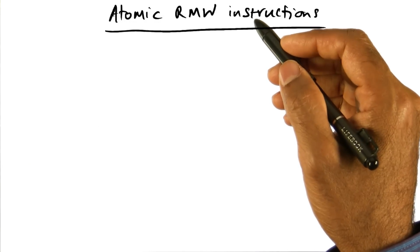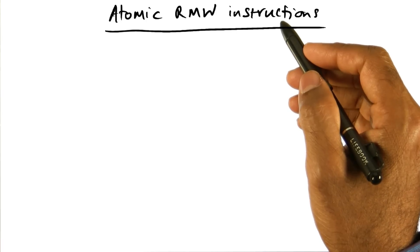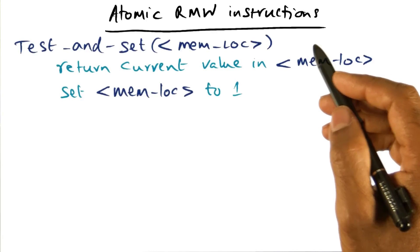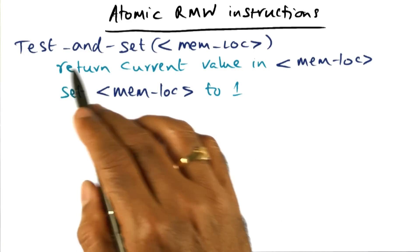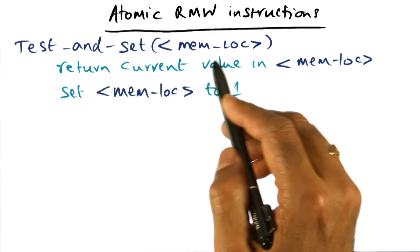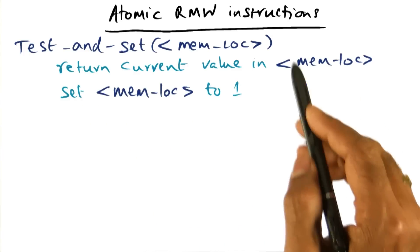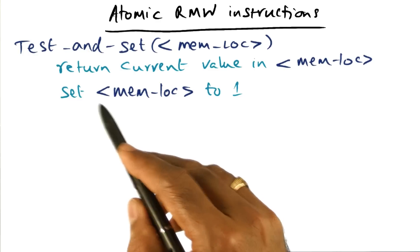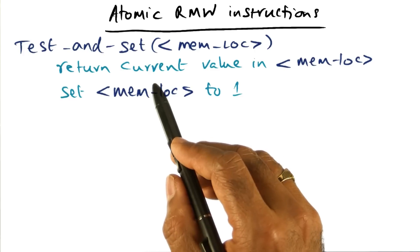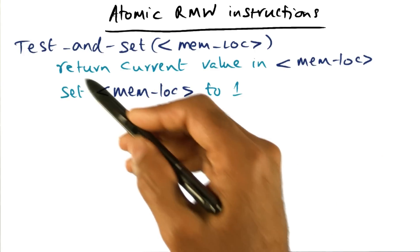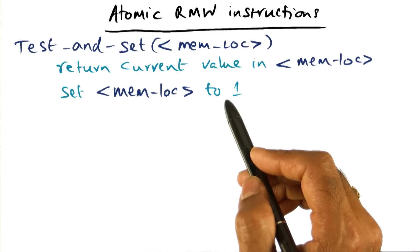Now several flavors of read, modify, write instructions have been proposed and or have been implemented in processor architectures. And we will look at a couple of them. The first one is what is called a test and set instruction. The idea here is, the test and set instruction takes on a memory location as an argument. And what it does is, it returns the current value that is in this particular memory location, and also sets the memory location to a one. So these two things that are being done, that is, getting the current value from memory and setting it to one is being done atomically. That's the key thing, that it is testing the old value and it is setting it to this new value atomically.